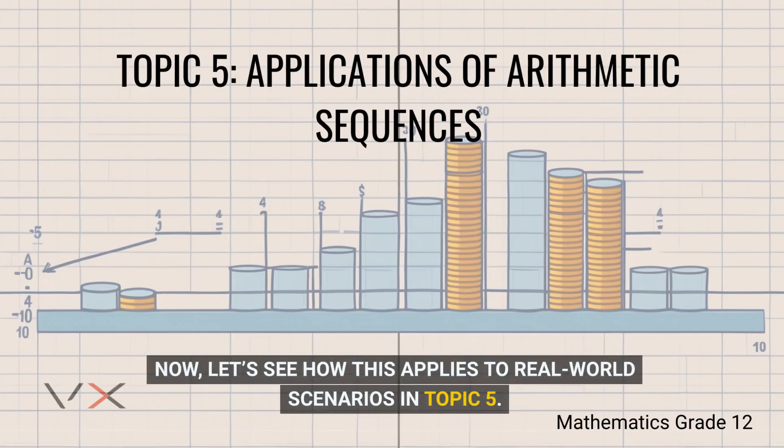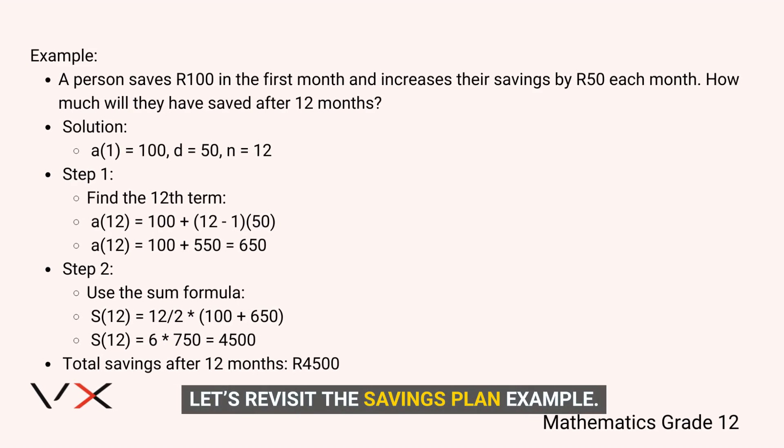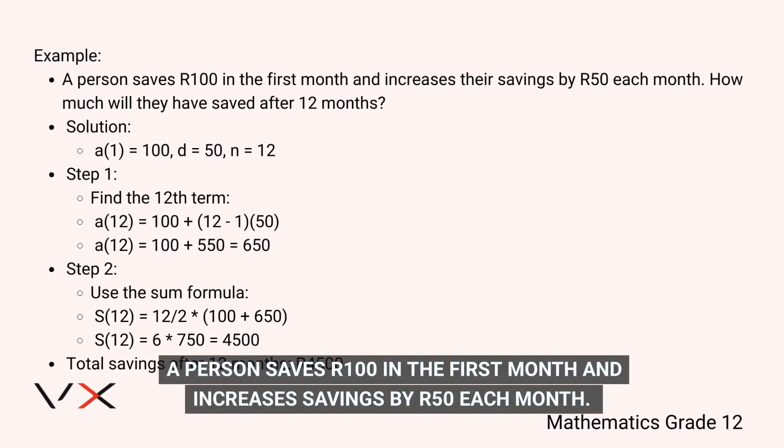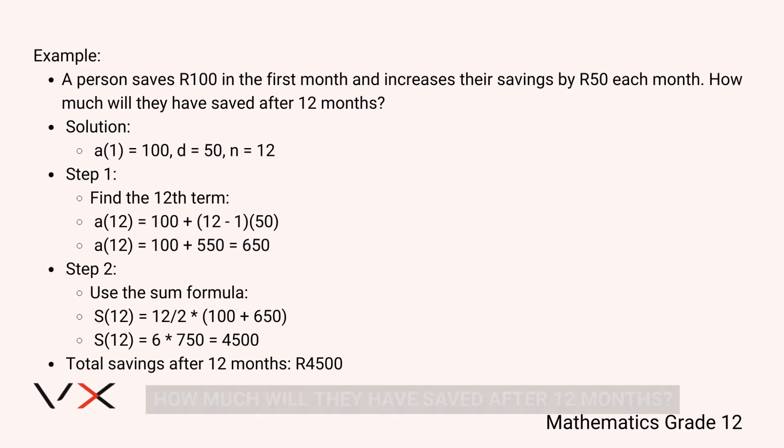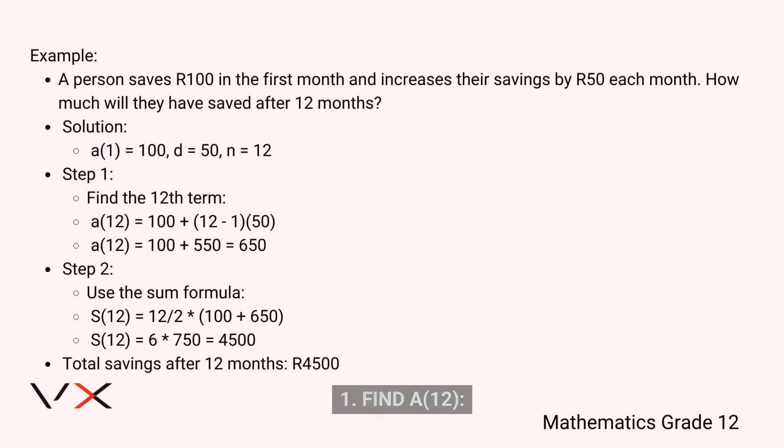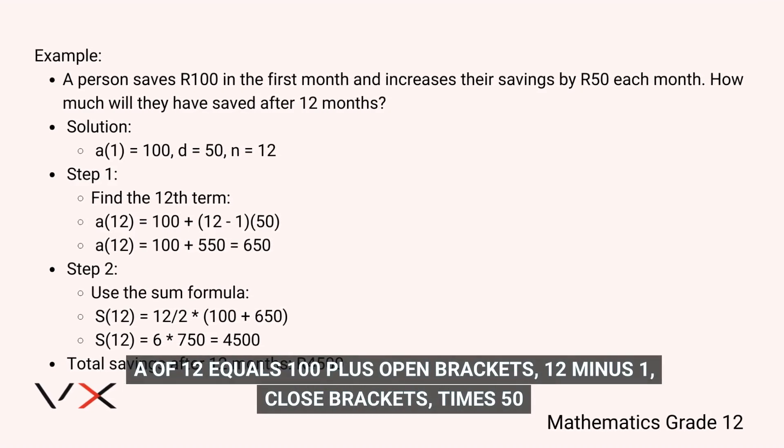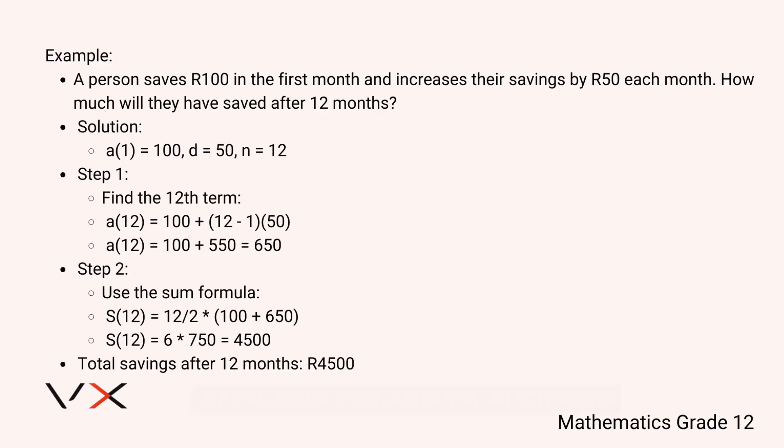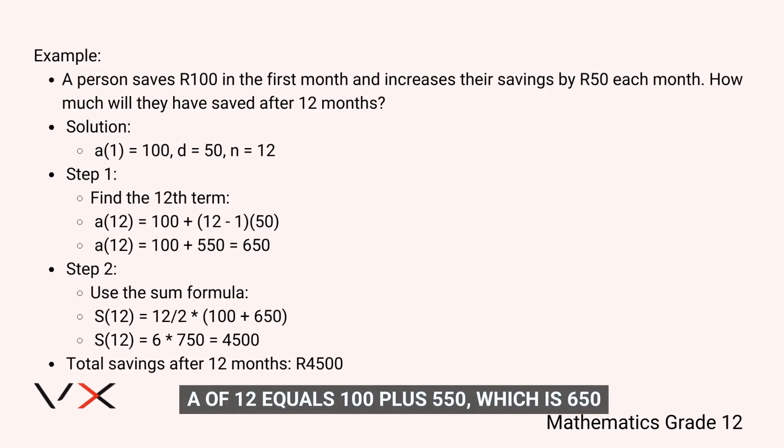Brilliant. Now let's see how this applies to real-world scenarios in Topic 5. Let's revisit the savings plan example. A person saves 100 Rand in the first month and increases savings by 50 Rand each month. How much will they have saved after 12 months? First, find a(12): a(12) = 100 + (12-1) × 50. a(12) = 100 + 550, which is 650.